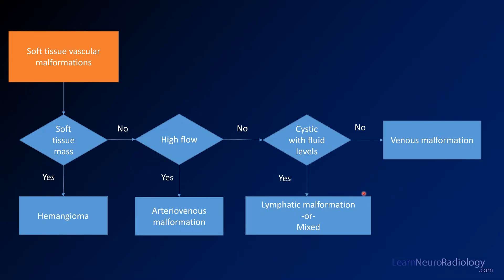When thinking about soft tissue vascular malformations, you should follow this flowchart. First, look to see if there's a soft tissue mass. If there is a soft tissue mass component, you're dealing with a hemangioma, because it has a proliferative component. If you don't have a soft tissue mass, assess whether there's high flow. If you have high flow or arterial-type flow, you're dealing with an arteriovenous malformation. If you have lower flow, you're dealing with either a lymphatic or venous malformation. Lymphatic malformations tend to be cystic and have fluid levels, with layers of fluid dependently. If you don't have that cystic appearance, you're probably dealing with a venous malformation.